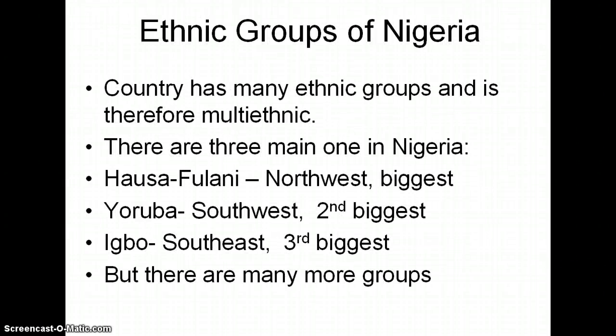The ethnic groups of Nigeria — the country has many different ethnic groups, bunches and bunches. The three main ones are the Hausa-Fulani, which are primarily in the north and northwest; the Yoruba, which are in the southwest and are the second biggest; and the Igbo, which are in the southeast and are the third biggest.